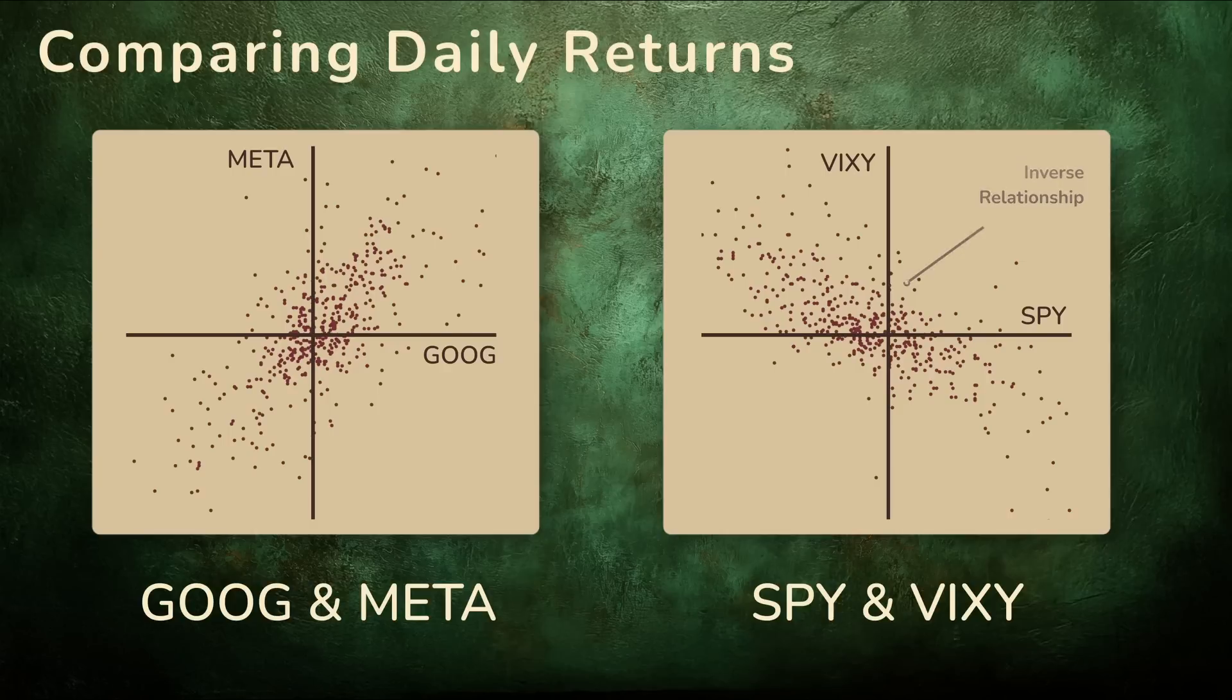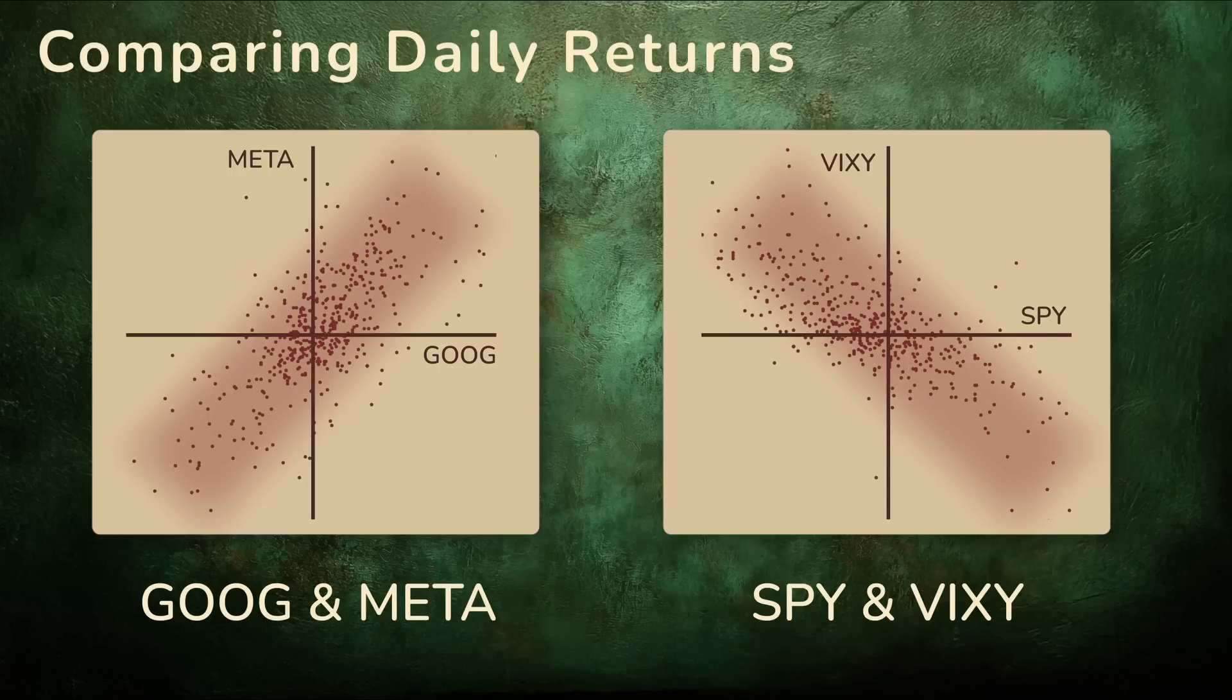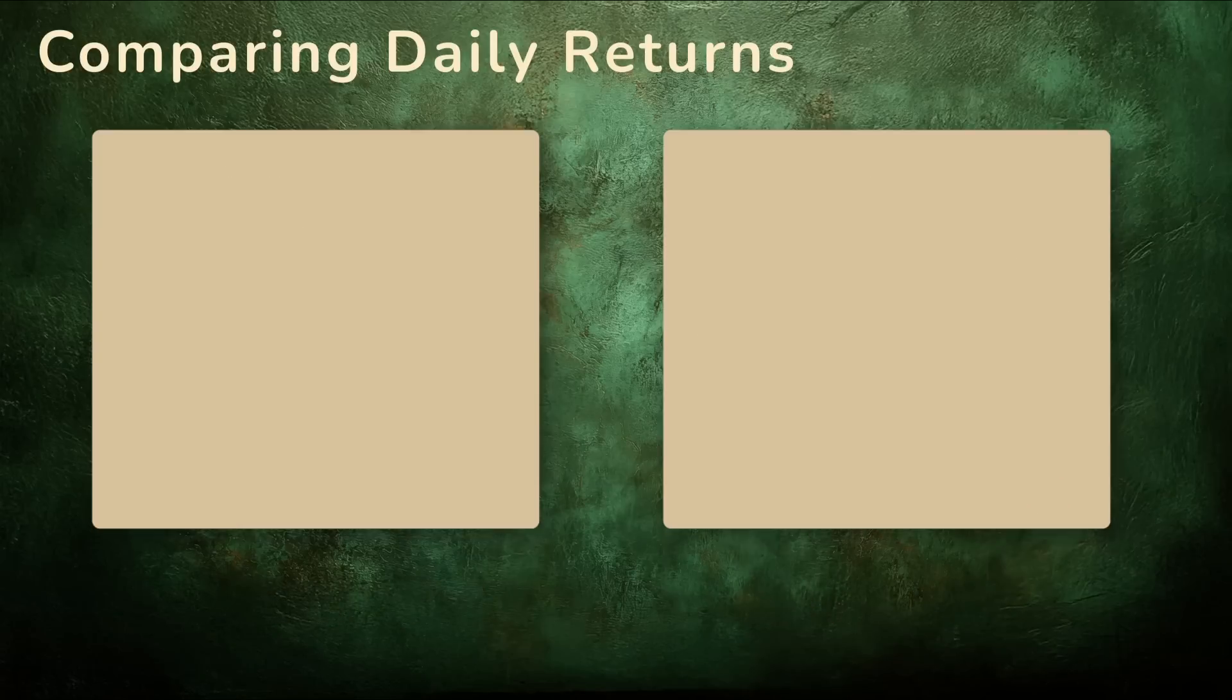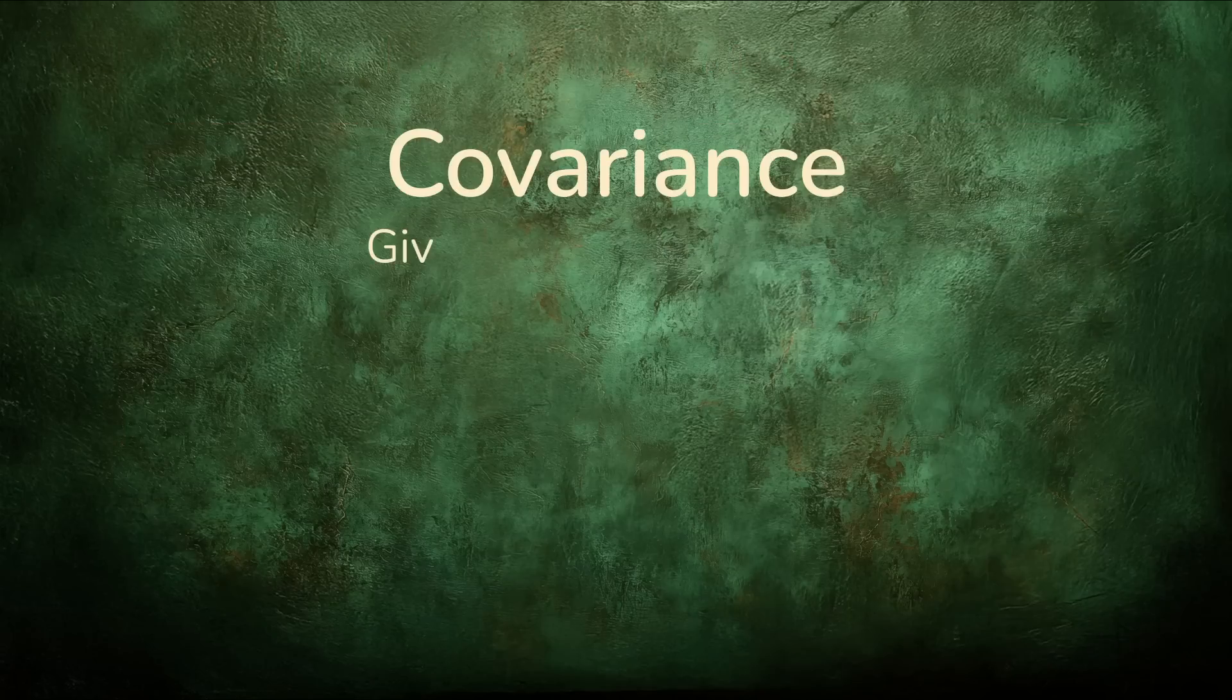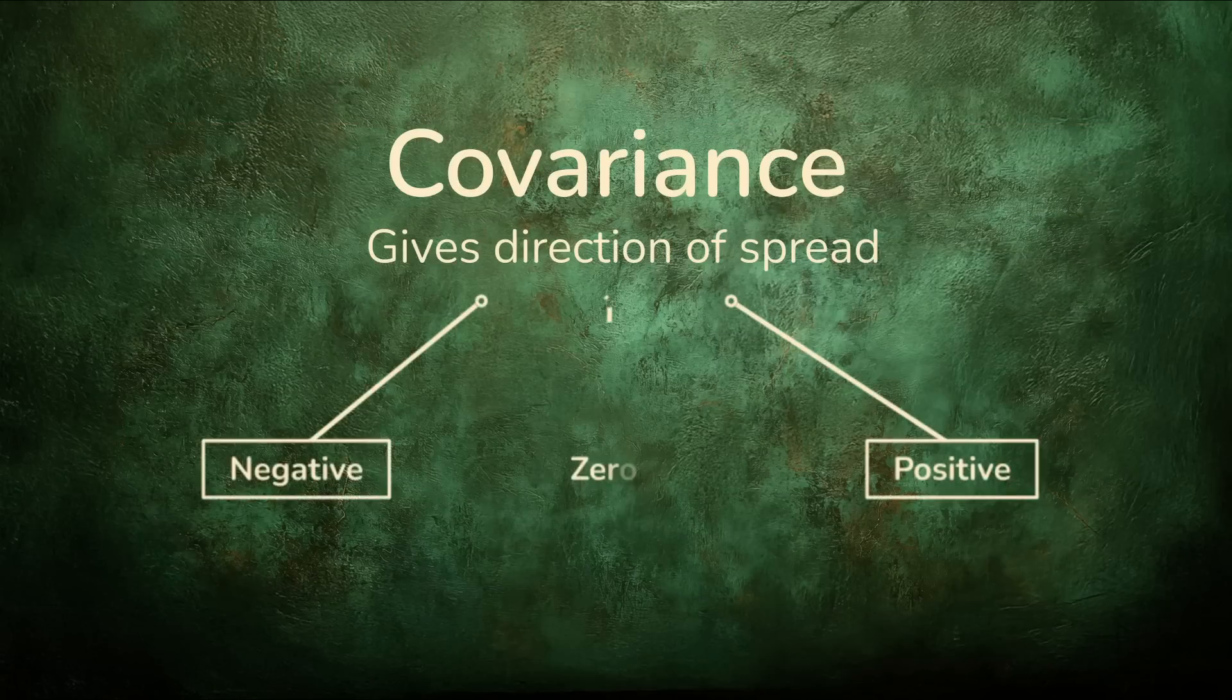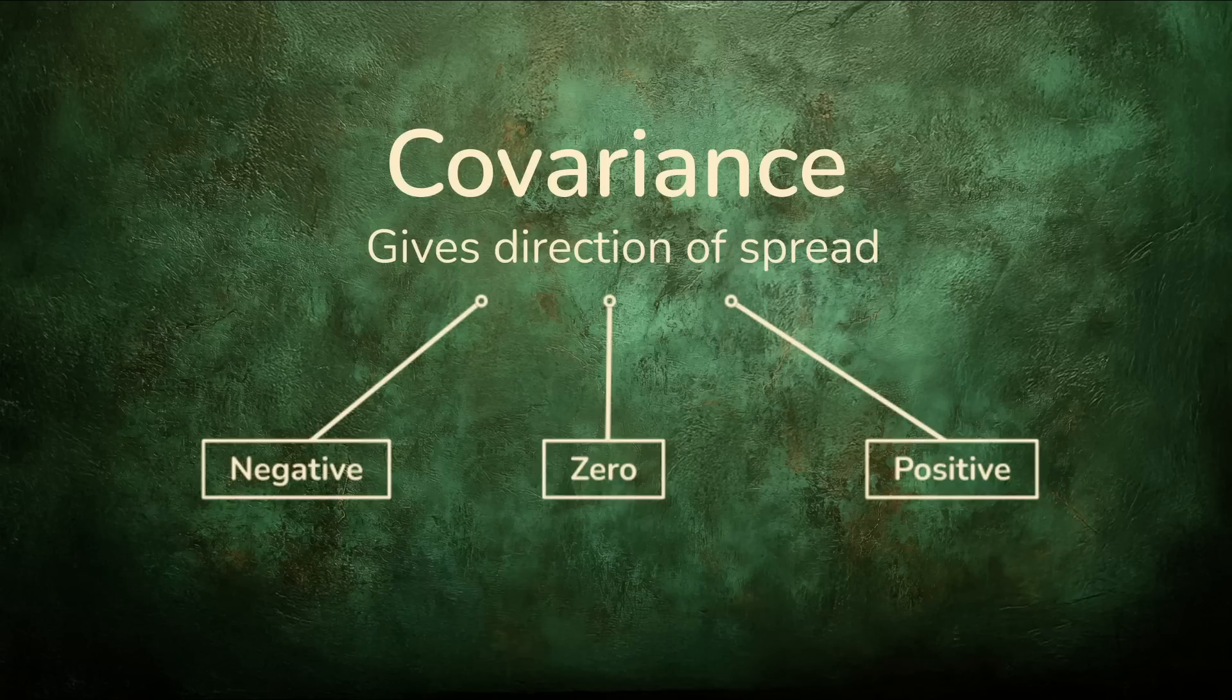These tilted clouds, up and to the right, down and to the right, are the kinds of patterns covariance is designed to measure. Covariance gives us a number that captures the overall direction of that spread. Positive, negative, or none at all. That number tells us how two variables move together.